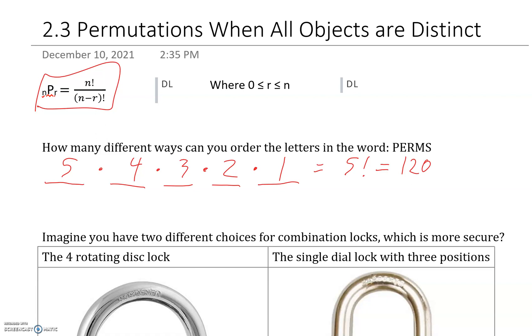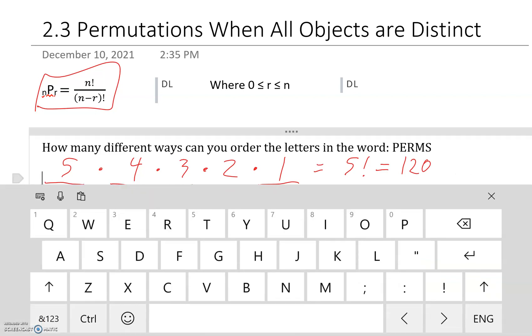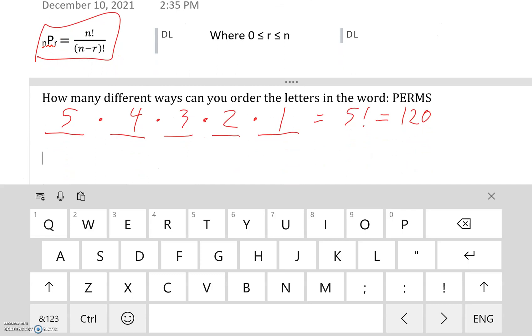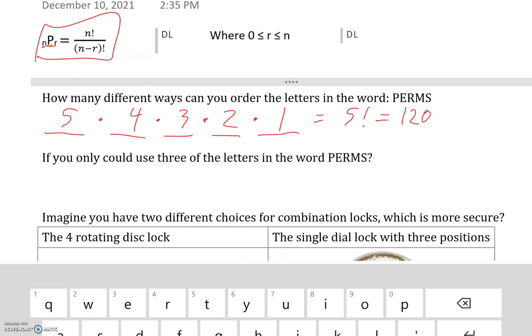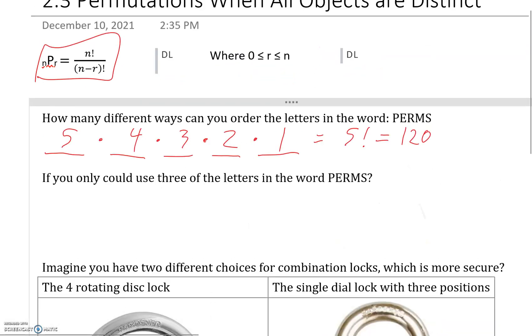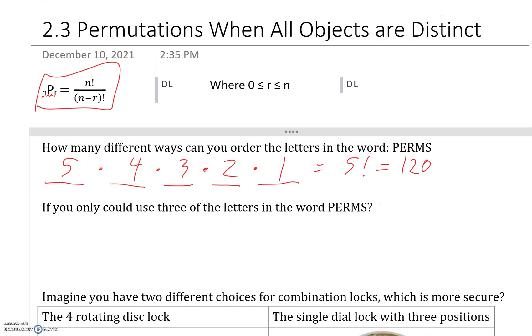So nice and simple. But let's change it up a little bit and say, not just the word PERMS, but if you only could use three of the letters in the word PERMS. So what about now? We can only use three of the letters, but we still have all five letters to choose from. So five choices at first.